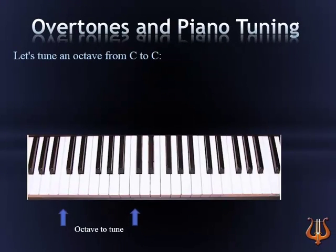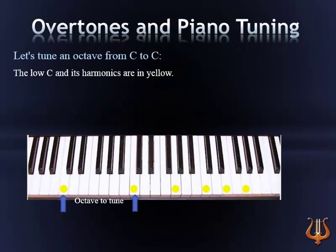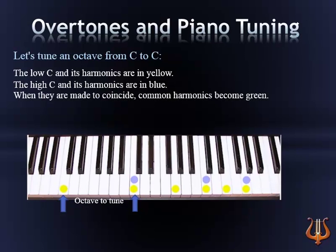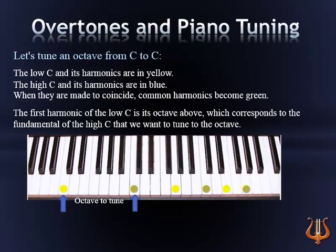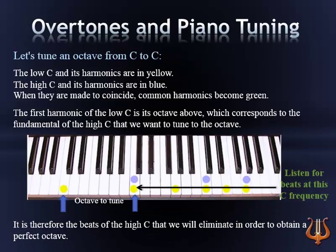Let's tune an octave from C to C. The low C and its harmonics are in yellow. The high C and its harmonics are in blue. When we overlap them, common harmonics become green. The first harmonic of the low C is its octave above, which corresponds to the fundamental of the high C that we want to tune to the octave. It is therefore the beats of the high C that we will eliminate in order to obtain a perfect octave.